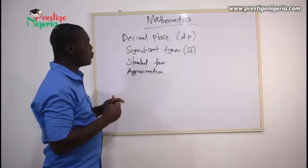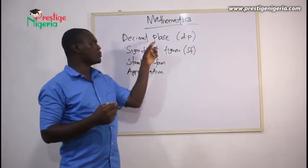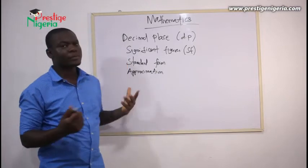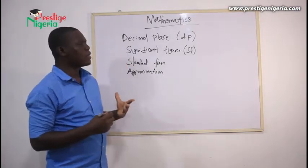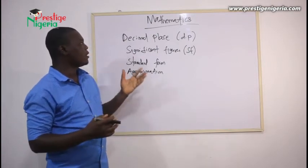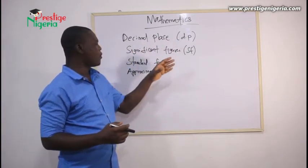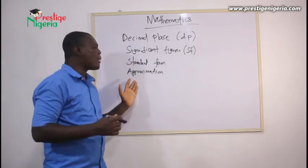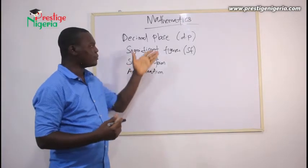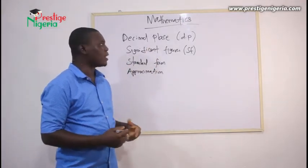The reason I want to start with these four basic elements is that there are times when a question asks you to give your answer in maybe two decimal places, a particular number of significant figures, in standard form, or approximate to the nearest whole number. If you don't know what those terms mean, you are going to give the wrong answer.